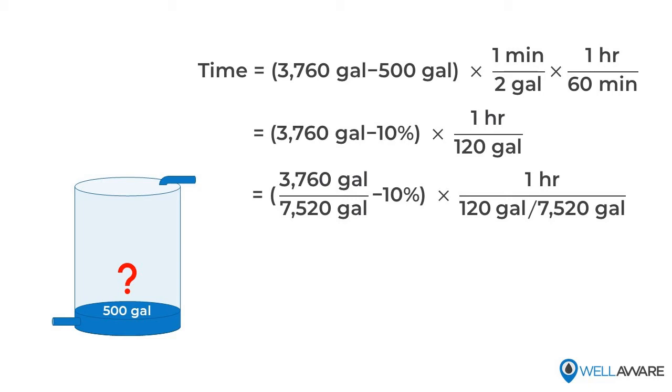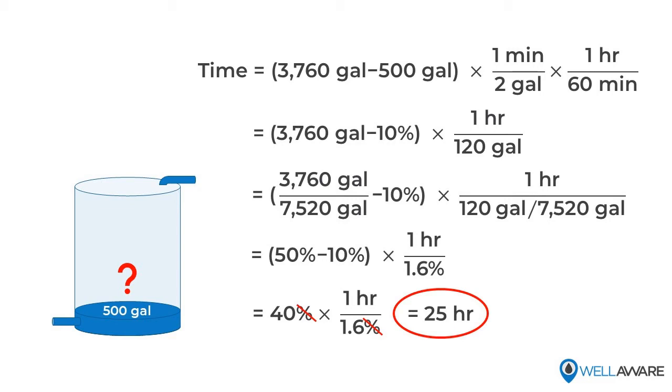So 3,760 current volume reading is 50% of the capacity as we discussed, and 120 gallons per hour equals about 1.6% of the tank capacity per hour, meaning that with the current net flow out, our tank is losing 1.6% of its capacity each hour. Now I subtract my current volume of 50% by my target of 10% to get a difference of 40%, and then I divide that number by 1.6% per hour, and I can see that my tank will be empty in 25 hours, or just over a day. And that's how you do it.